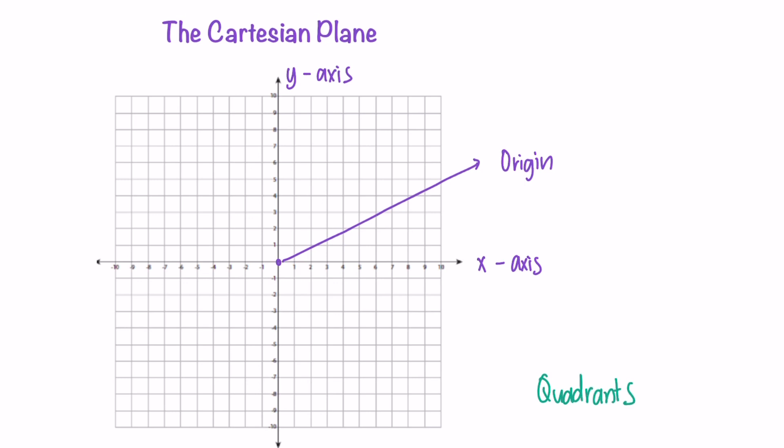These quadrants are numbered in anti-clockwise directions, starting with the first quadrant. Then it's going to go anti-clockwise. So this would be the second quadrant, followed by the third quadrant, and the fourth quadrant.